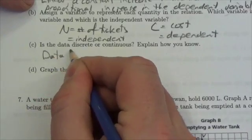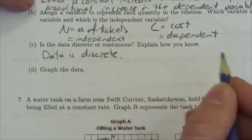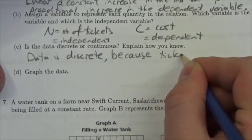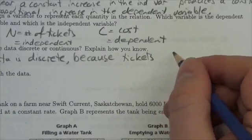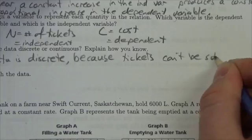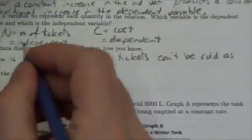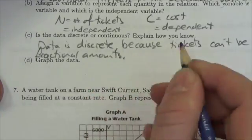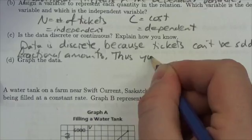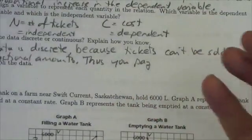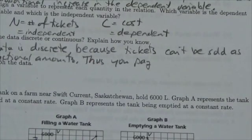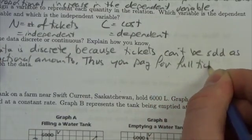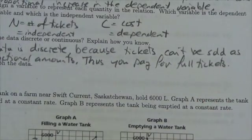It's not going to go up by fractions of that amount, so I would argue that in both cases here, the data is discrete. Because the tickets can't be sold as fractional amounts. And thus, you'll never pay fractions of the amount of the tickets, so you always pay for full tickets. You never pay for fractional amounts here.